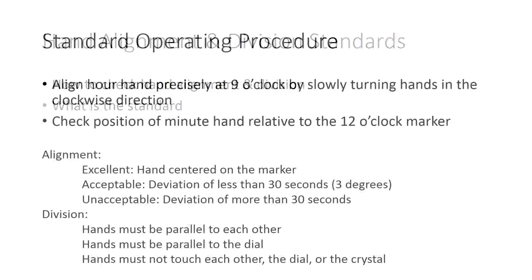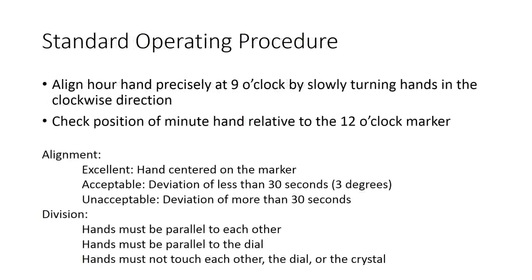The standard operating procedure for checking the hand alignment is first to align the hour hand precisely at 9 o'clock by slowly turning the hands in the clockwise direction. Next, you'll check the position of the minute hand relative to the 12 o'clock marker and take note of the deviation.